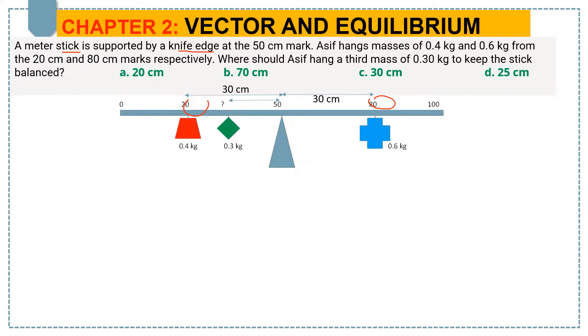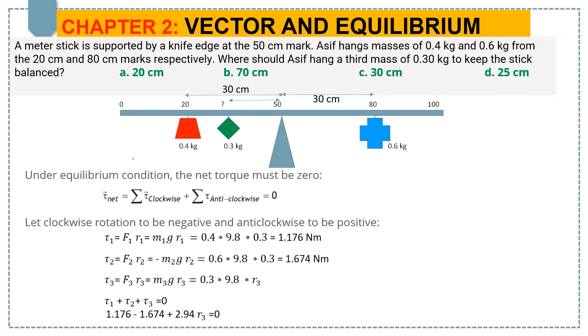Suppose this is the point where Asif should hang the third mass of 0.3 kg, at some distance from the knife edge. This is the distance which we will find first. As we know, under equilibrium condition, the net torque must be zero.